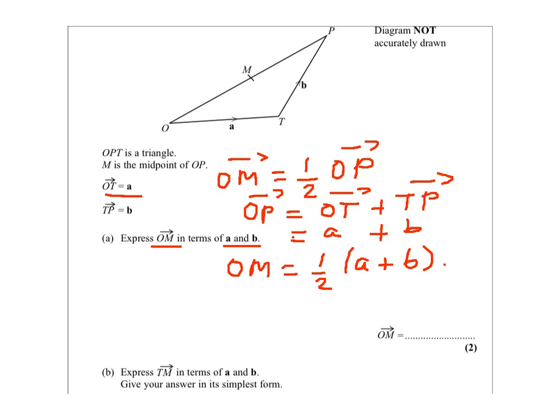Now for the second question, TM in terms of a and b, we can write TM as TO plus OM. So TM equals TO plus OM.